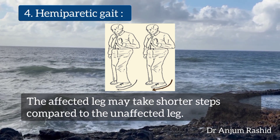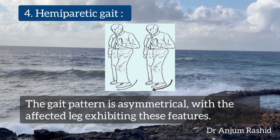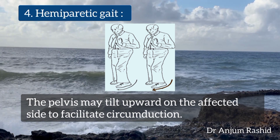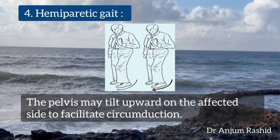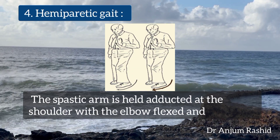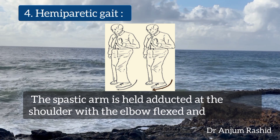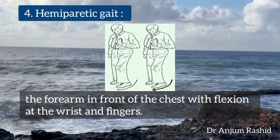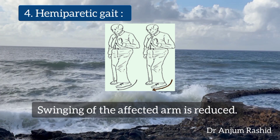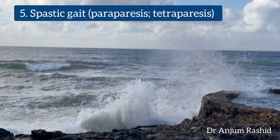The affected leg may take shorter steps compared to the unaffected leg, making the gait asymmetrical. The pelvis may tilt upward on the affected side to facilitate circumduction. In addition, the spastic arm is held adducted at the shoulder with the elbow flexed, the forearm in front of the chest, and flexion at the wrist and fingers. Swinging of the affected arm is also reduced.